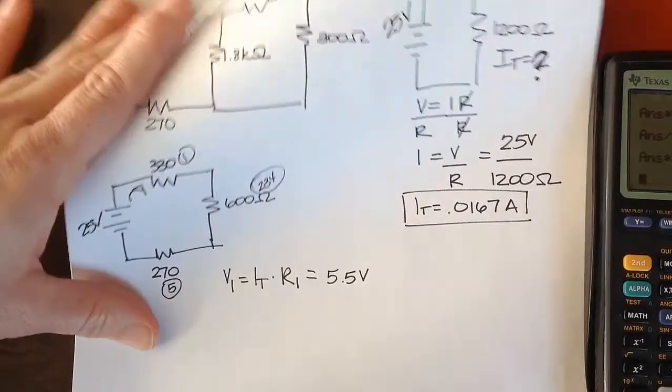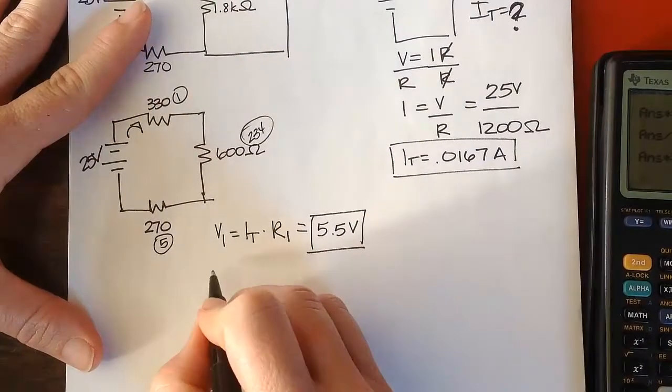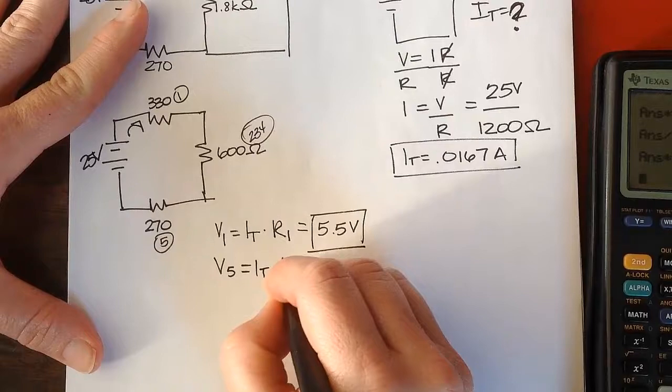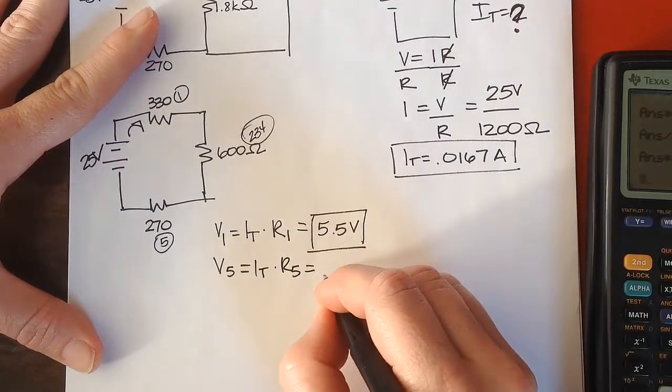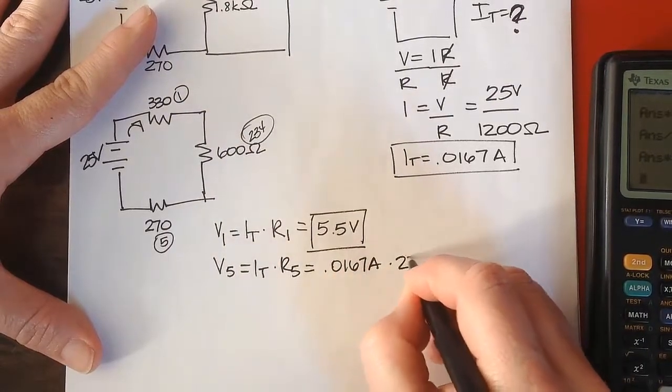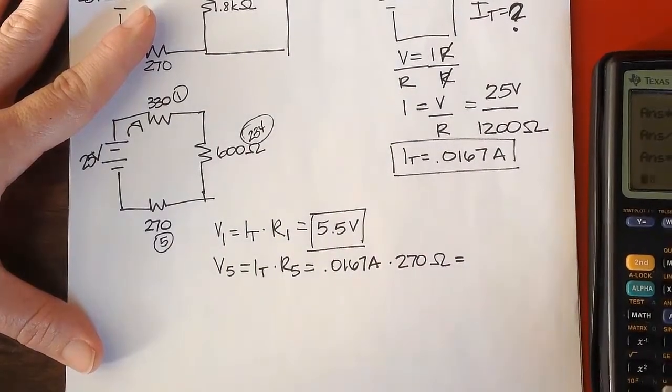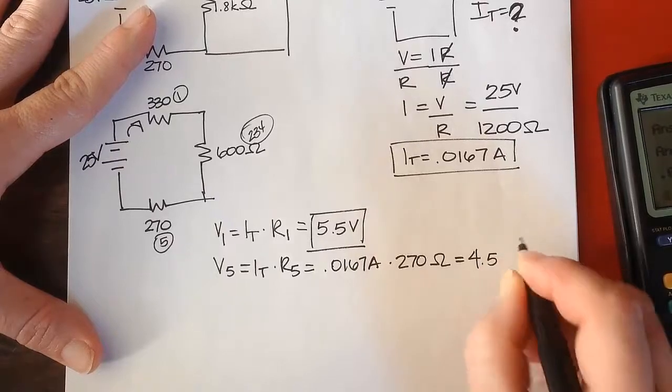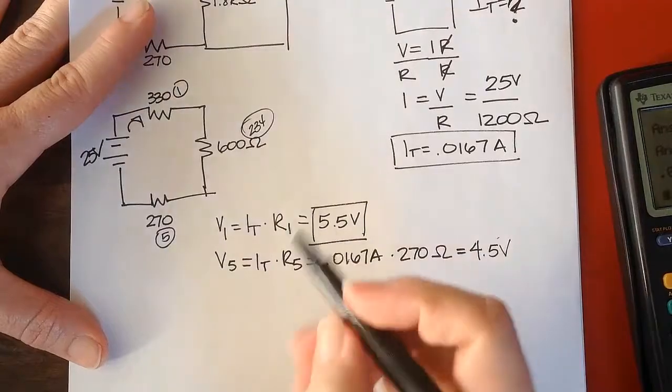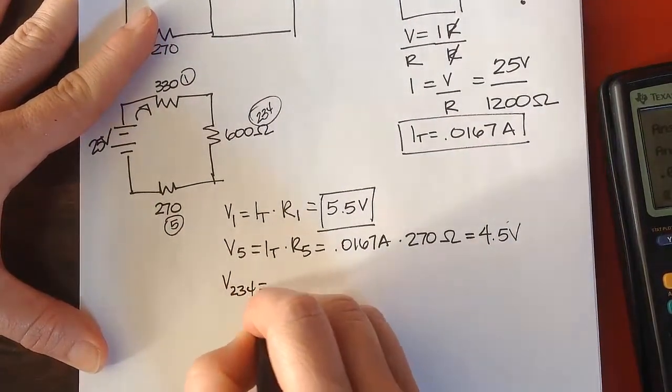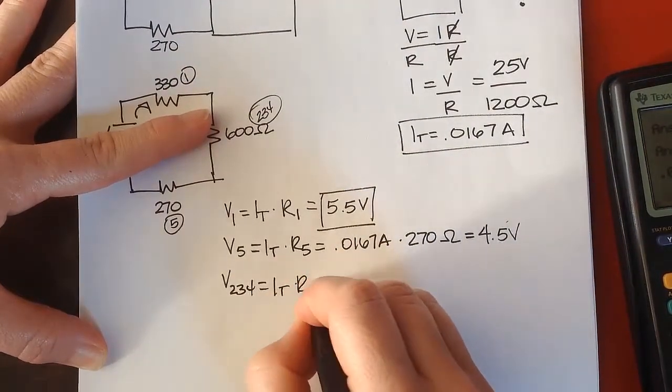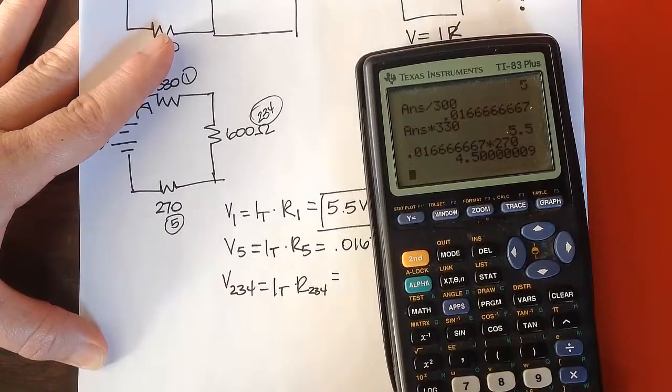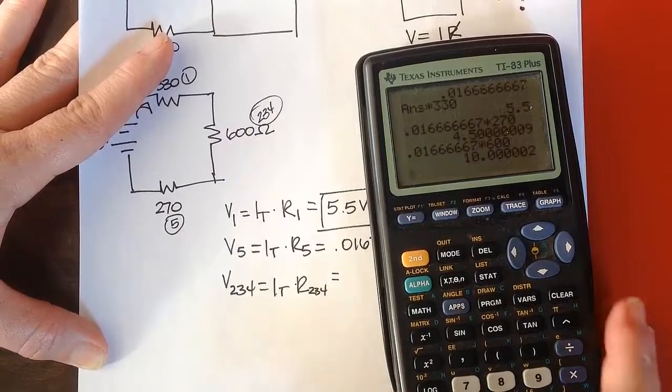And then I want to do the same thing for V5. And V5 is going to be IT times R5, which is going to work out to be 0.0167 amps times 270 ohms, and so we're going to get 4.5 volts. And now, to get V, the voltage drop against 2, 3, and 4, that's going to be IT times R2,3,4, that equivalent resistance. So that's going to be our total times our 600 ohms. And I get 10 volts.